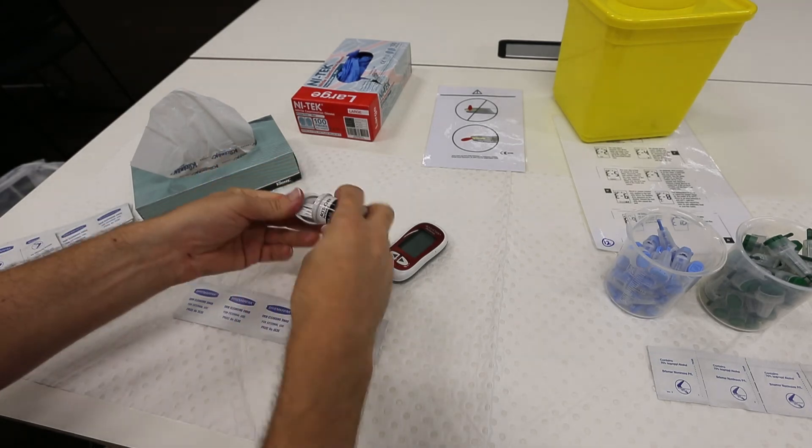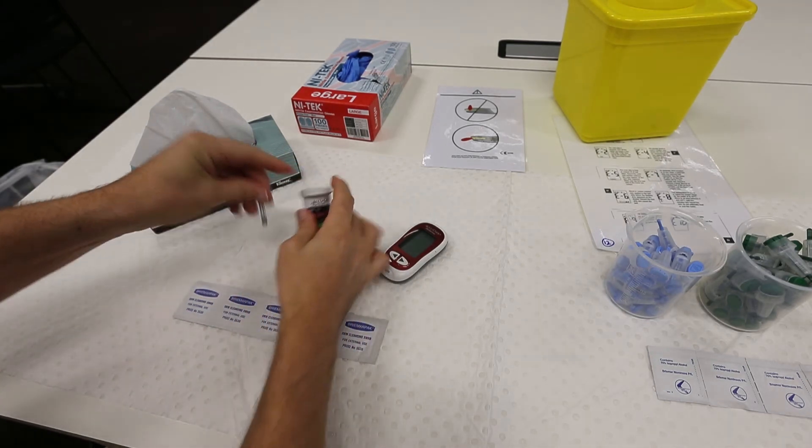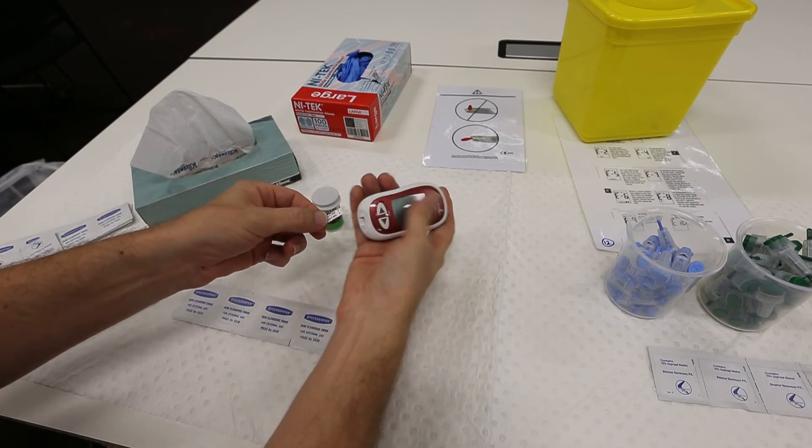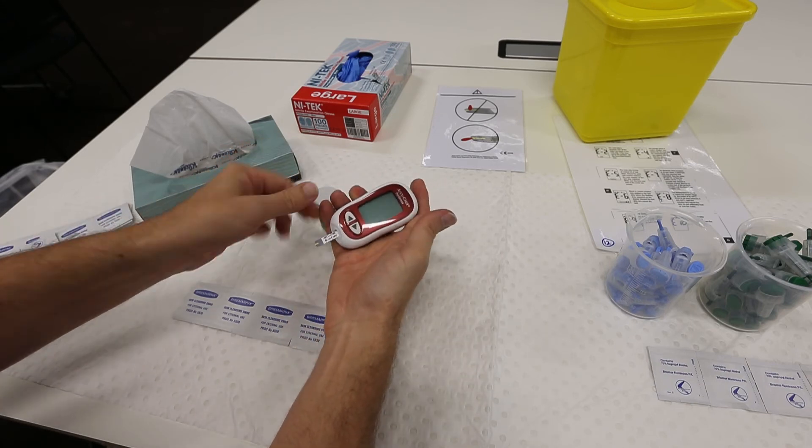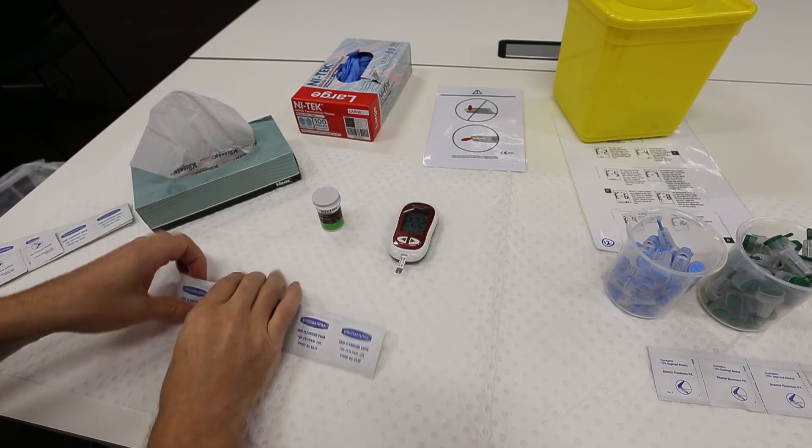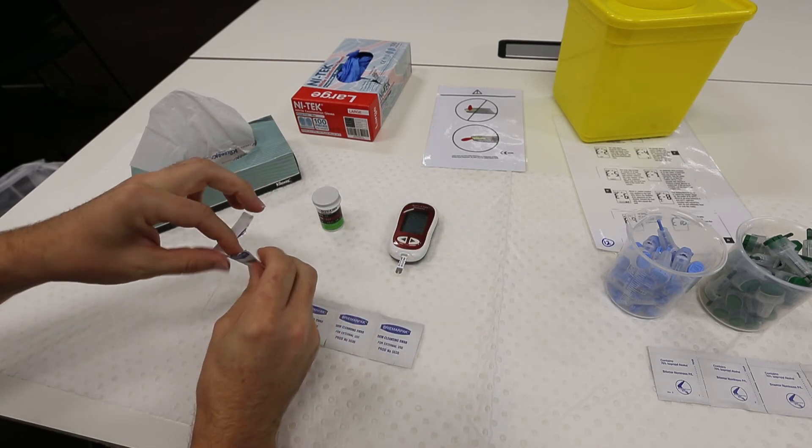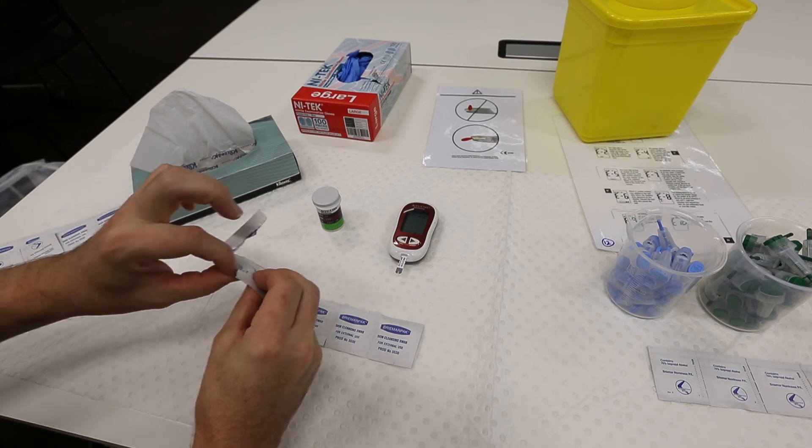Now we will demonstrate the whole procedure from start to finish. First of all, take one of the glucose test strips and insert the copper electrode end of the test strip into the glucose test unit. Next, take an alcohol swab and sterilize your chosen finger.